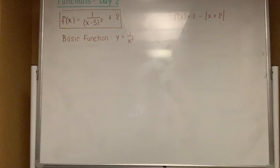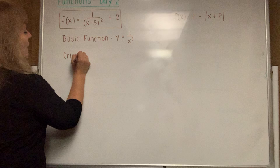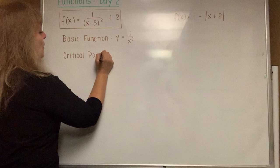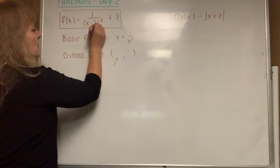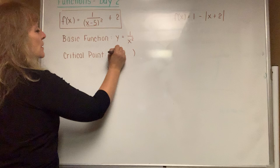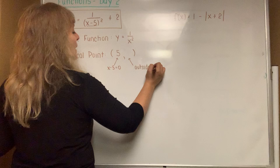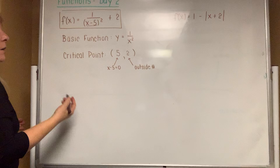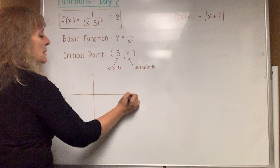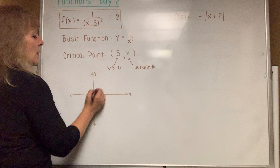We go back to our regular routine of first figuring out what the critical point is — that procedure never changes. To find the x-coordinate, set the x part equal to 0. When you add 5 to both sides, you get x equals 5. For the y-coordinate of the critical point, go for the outside number, which is positive 2. Draw your small coordinate grid, label the x and y axes, and put in the point 5 across and up 2.